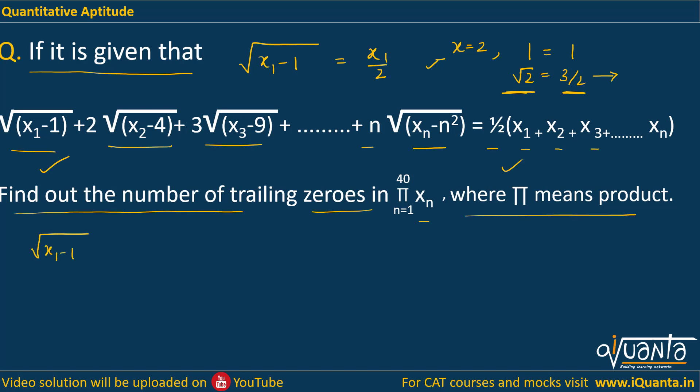If we do that we get √(x₁-1) = x₁/2. This can be further written as 2√(x₁-1) = x₁. If we square both sides we get 4(x₁-1) = x₁². So only one value of x₁ satisfies here which is 2.